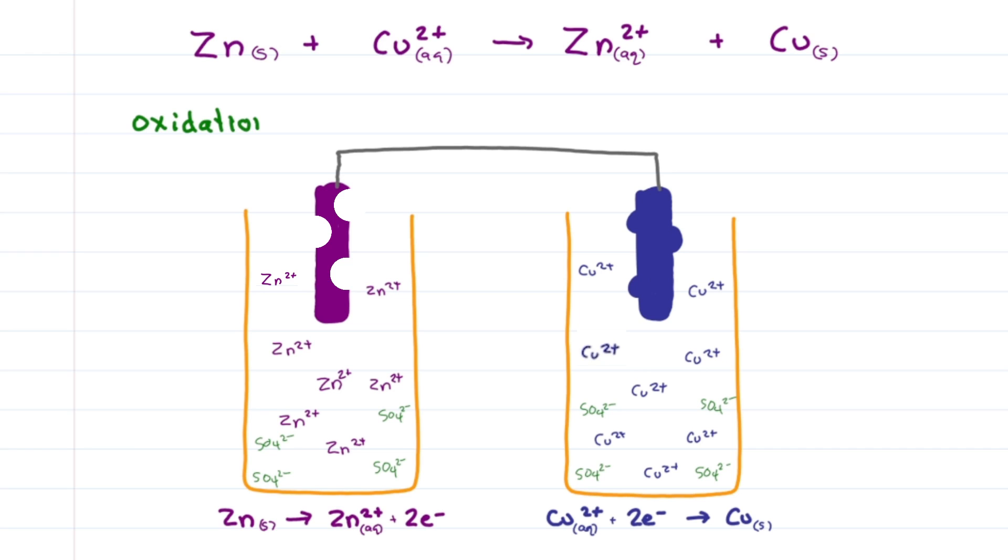Since oxidation happens at the zinc electrode, this is called the anode. Reduction happens at the copper electrode, making it the cathode. Use the mnemonic an ox and a red cat to help you remember that anode is oxidation and cathode is reduction.